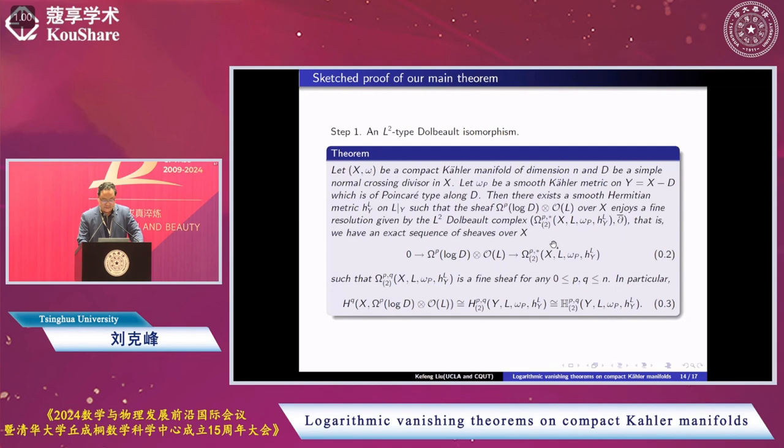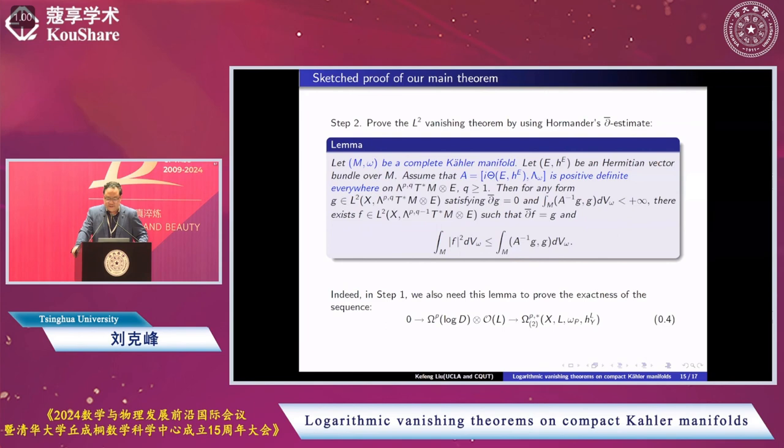Also by using L2 Hodge theory, it can be understood by using harmonic forms, L2 harmonic forms. The difficulty is to construct actually this L2, this metric, this H on L. Then we prove L2 vanishing theorem by using Hörmander's L2 d-bar estimate. Of course, this is very famous. We consider a complete Kähler manifold together with a hermitian vector bundle on L and assume this curvature term.